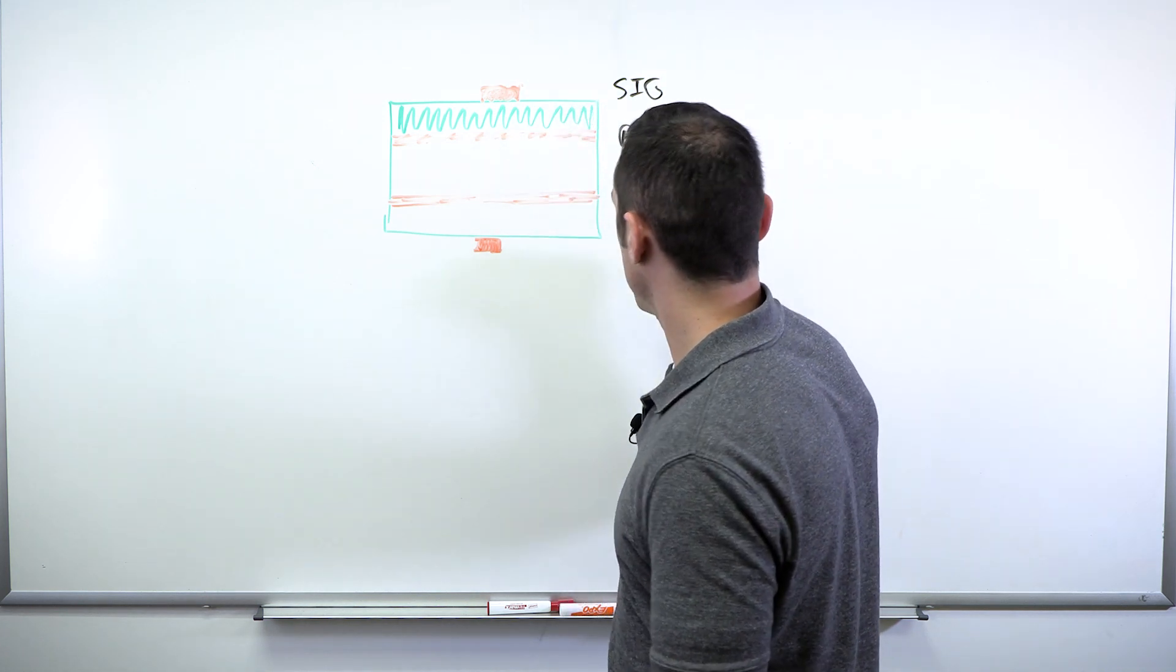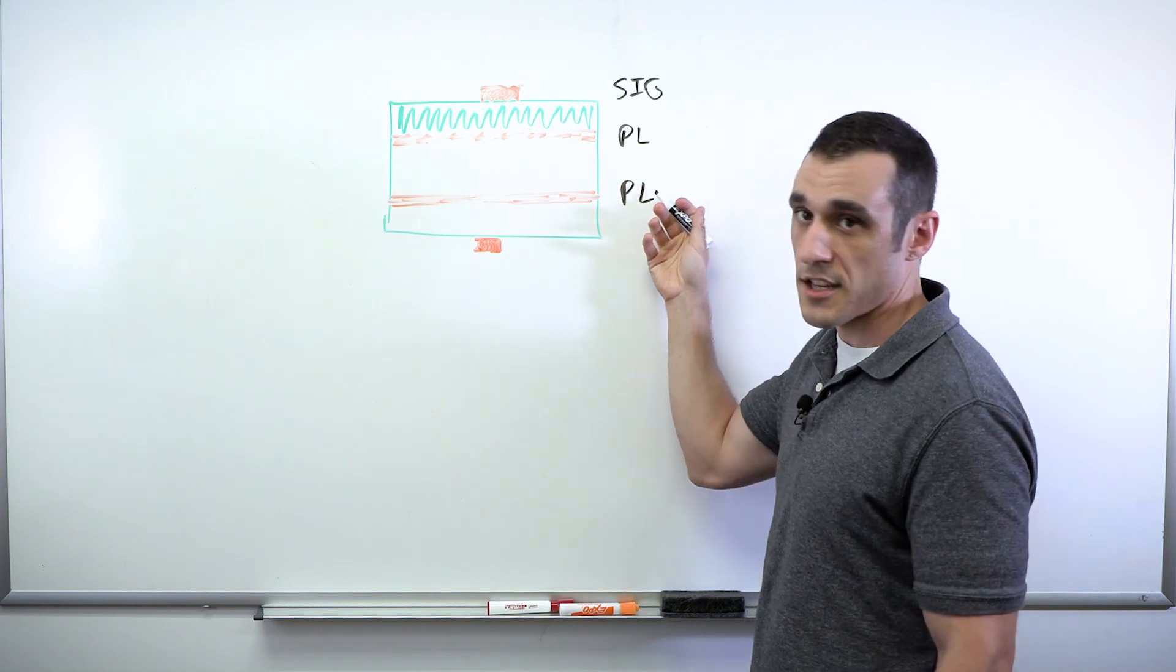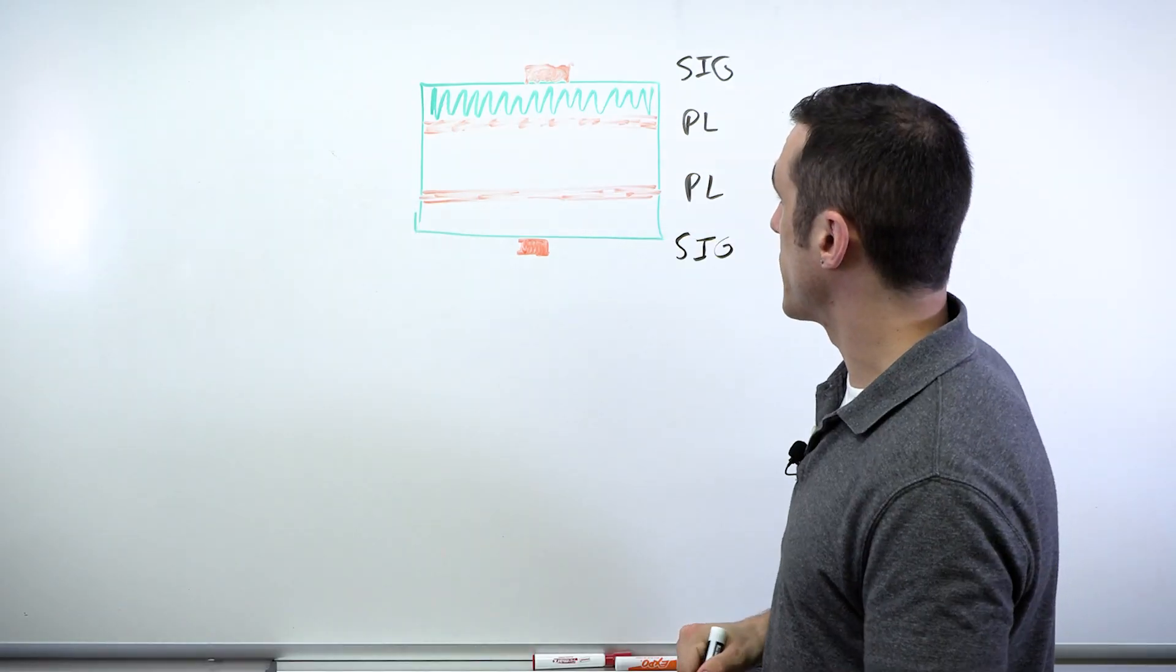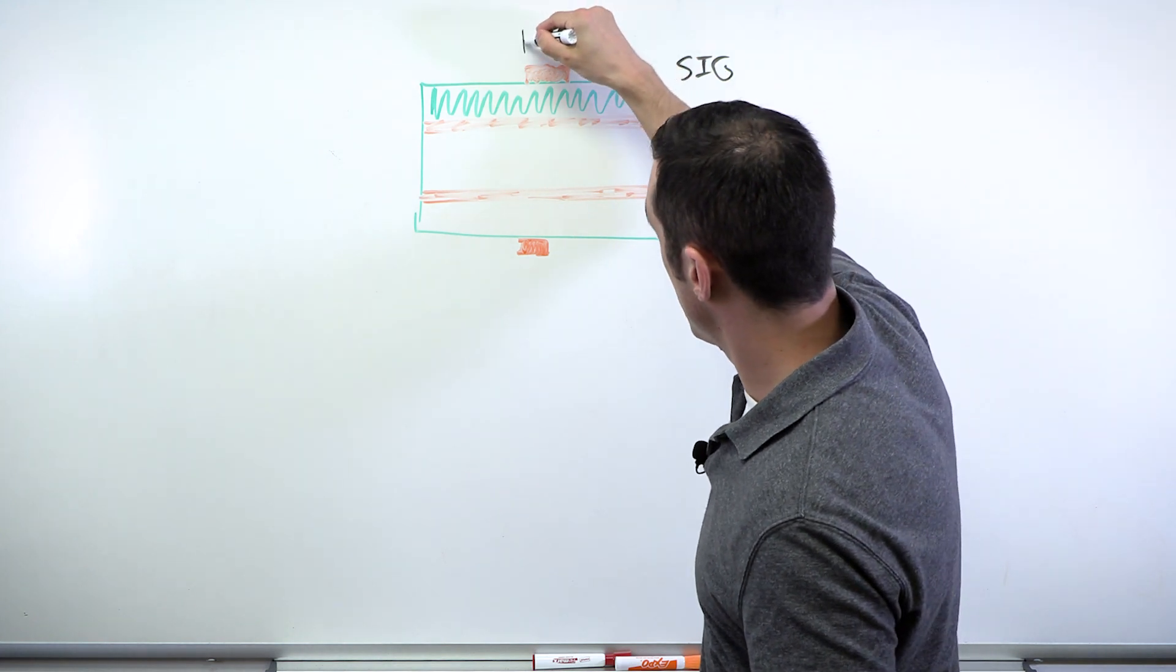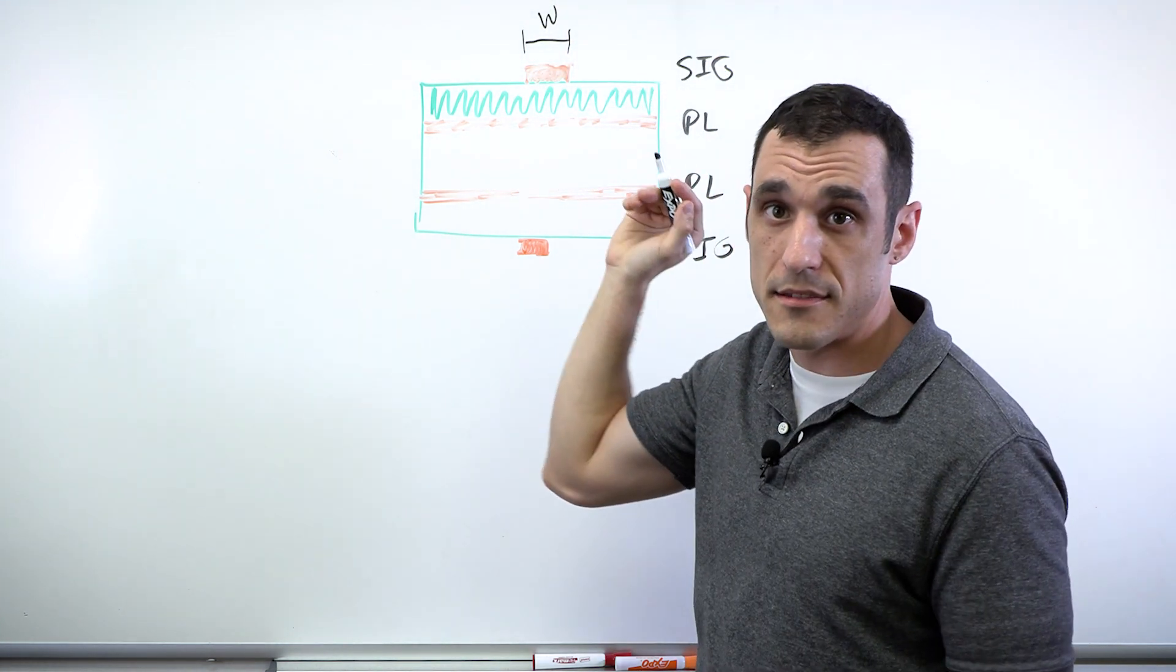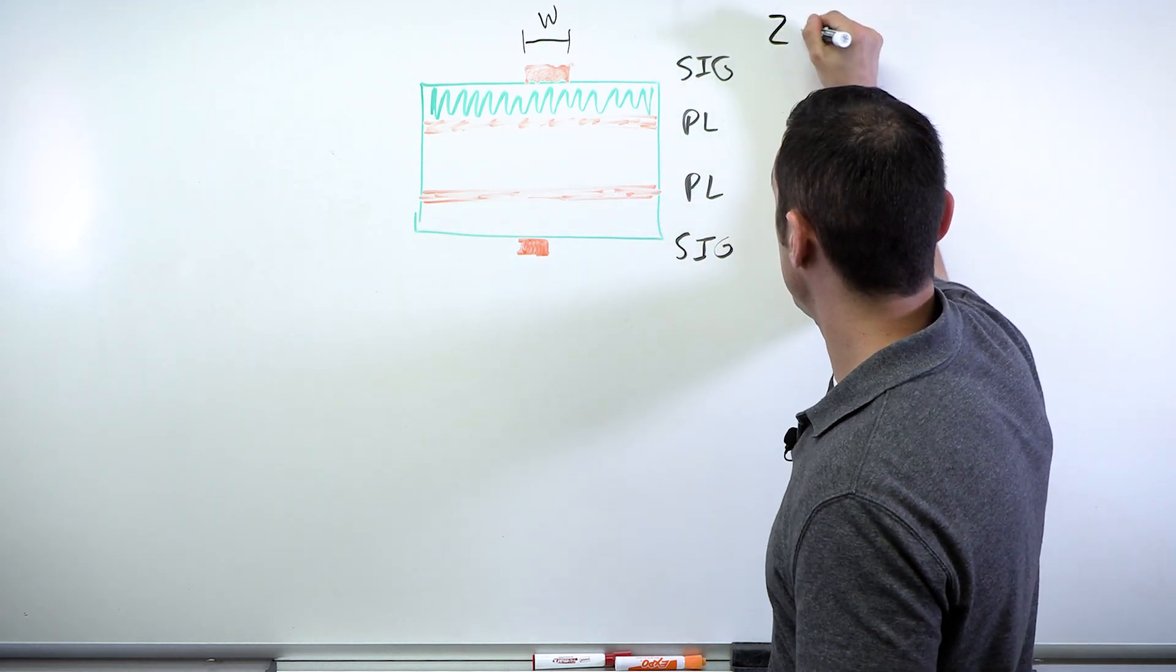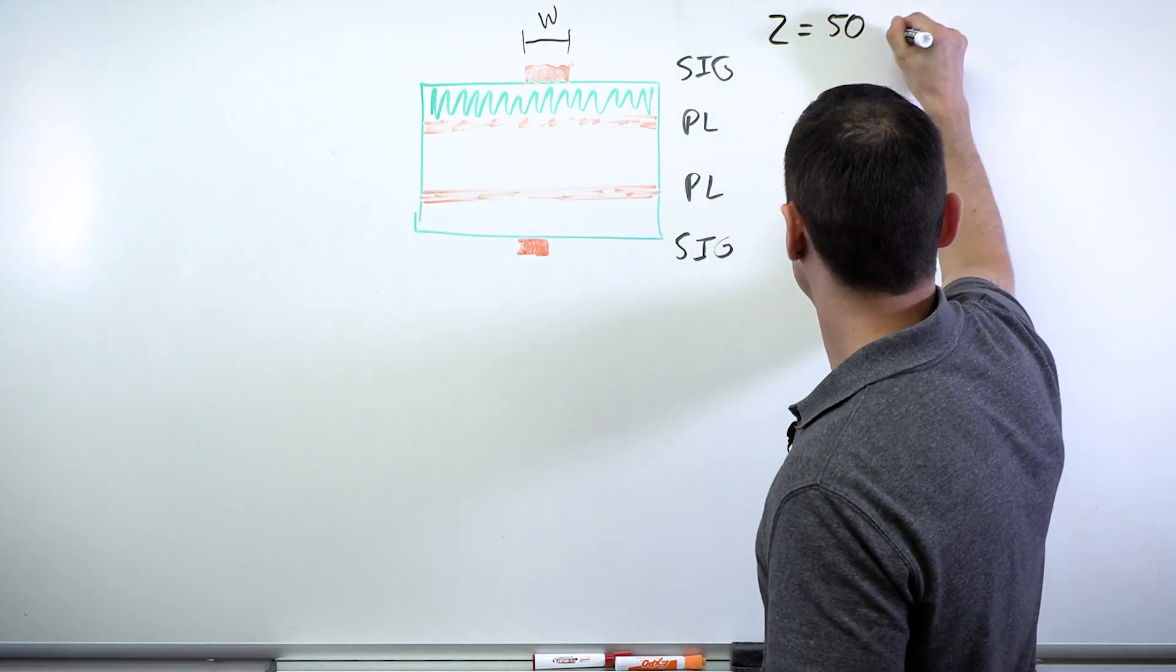And just for the moment, let's enforce some symmetry. Then I've got another plane layer and then signal. The design goal here is to determine this width W. And my goal is to get to an impedance of Z equals 50 ohms.